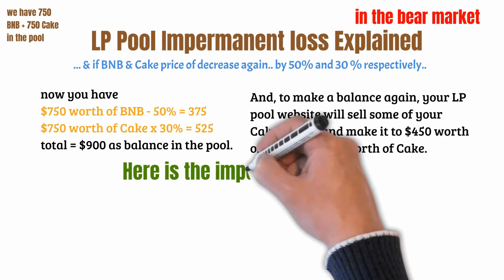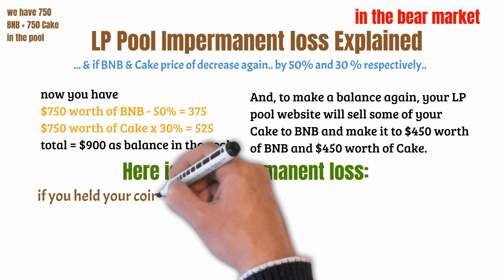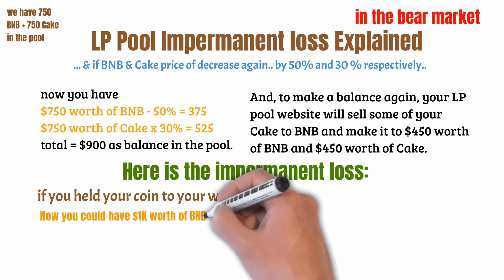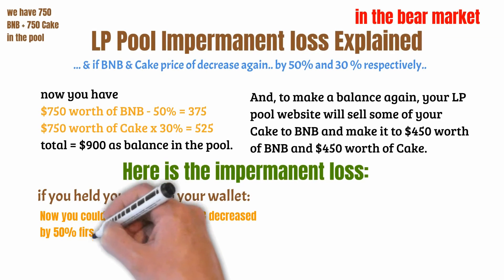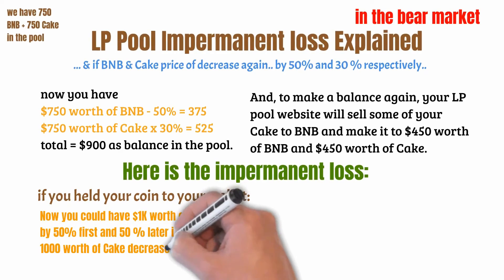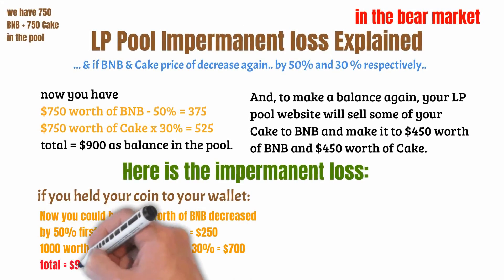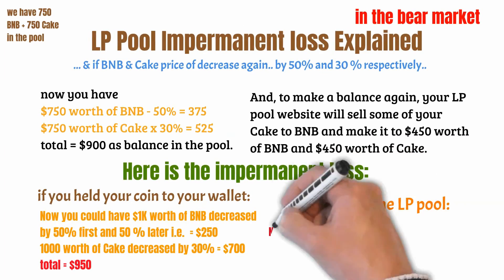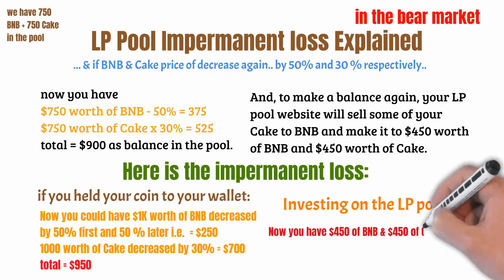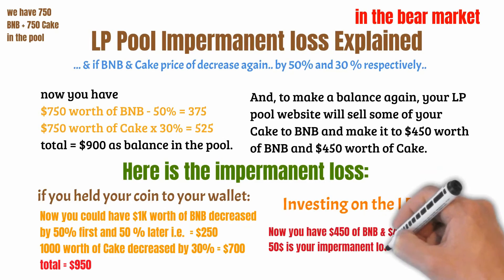Here is your impermanent loss. If you had simply held your coins in your wallet, you could have $1,000 worth of BNB decreased by 50% and then 50% again — that would be $250 — and $1,000 worth of Cake decreased by 30%, which is $700 — for a total of $950. Since you invested in the LP pool, you now have $450 of BNB and $450 of Cake, totaling $900. The difference of $50 is your impermanent loss while being in the bear market.